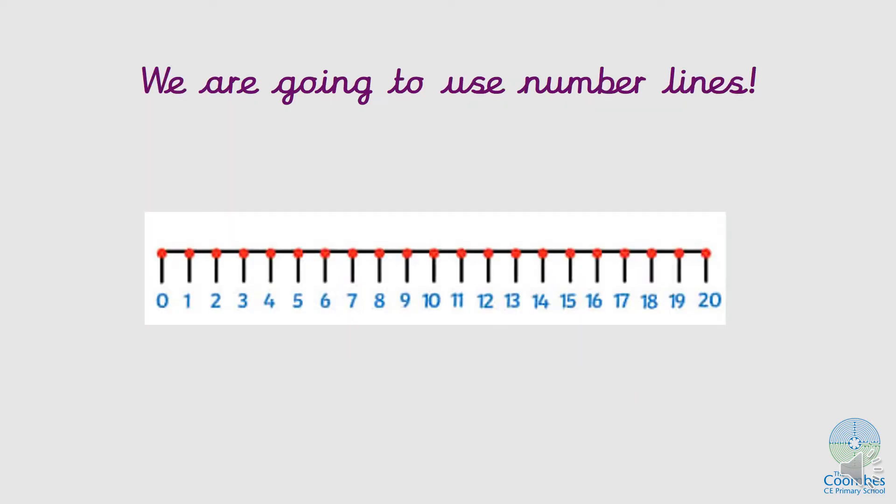OK, so we are going to be using a number line to add today. So what is this number line going up in? How many is it going up by each time? What are the jumps in? So these are jumps of one. So if you said ones, well done. And have a think before we move on about how we might be able to use this to help us today. We are adding a two digit number and a one digit number.